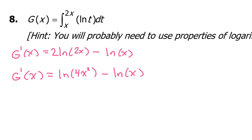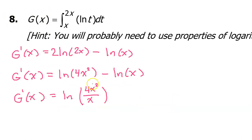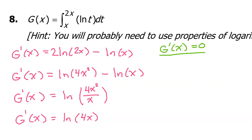Here comes another property of logarithms. If I have the natural log of a minus the natural log of b, I can write this as a single log of a over b. Applying that here, we can rewrite this difference of logs as a single log of 4x squared over x. One of the x's cancels out and we are left with the natural log of 4x.